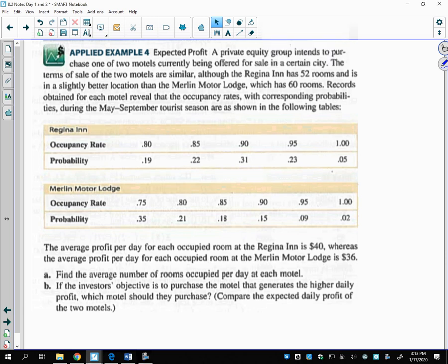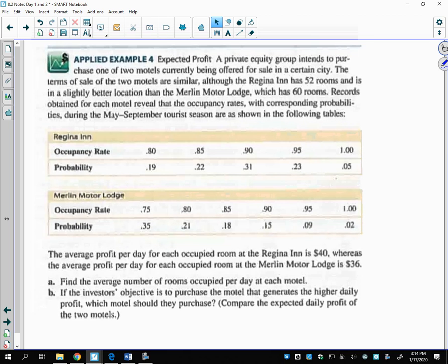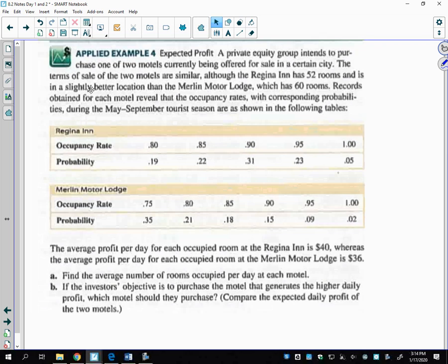Okay, so in class we talked about what expected value is and what it represents on a graph. Now let's look at some examples of how we can use expected value. Just like most things we do, we have to sort through the data. A private equity group intends to purchase one of two motels currently being offered for sale in a certain city. The terms of sale are similar, although the Regina Inn has 52 rooms and is in a slightly better location than the Merlin Motor Lodge, which has 60 rooms. Records obtained for each motel reveal that the occupancy rates with corresponding probabilities during the May through September tourist seasons are shown in the following table.